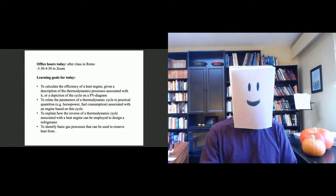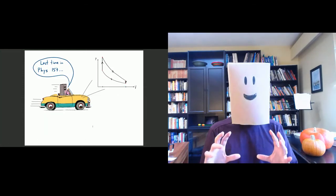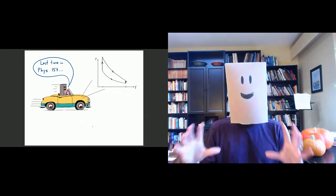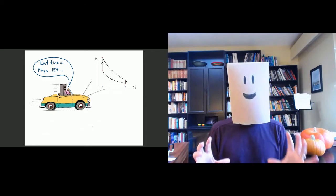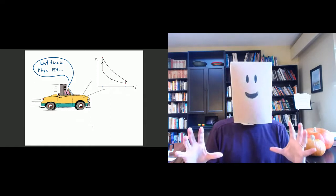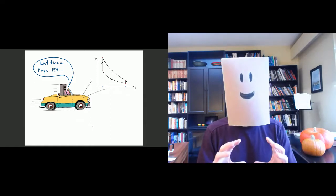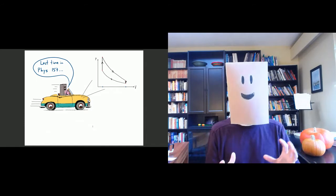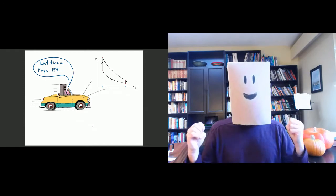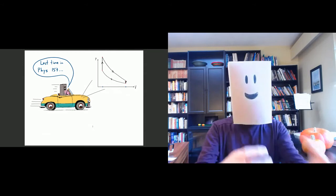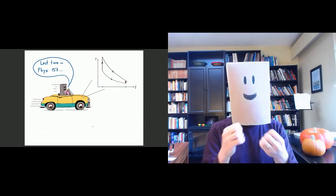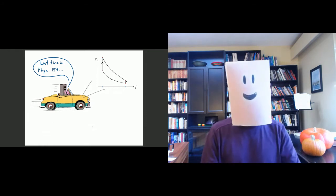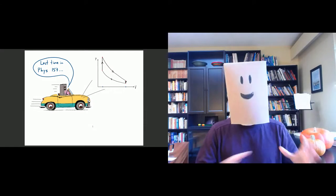We were talking about various kinds of thermodynamic processes that we're putting together in a cycle, and these kinds of cycles can be used in various useful mechanical processes — for example, to drive a car. The basic idea is that in a car engine we're getting heat by burning fuel, and we're partly converting that heat into mechanical work, which allows us to turn the axle of the car and make it go.